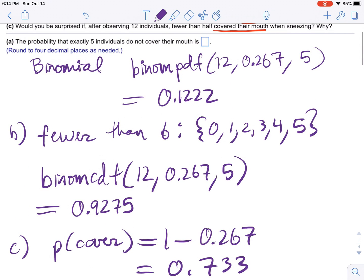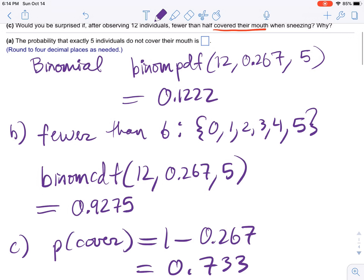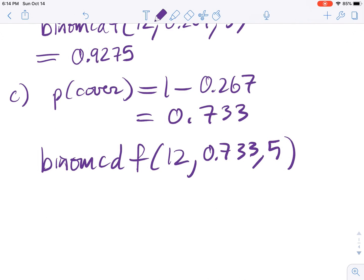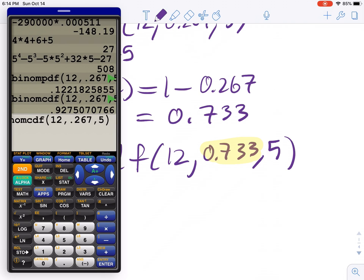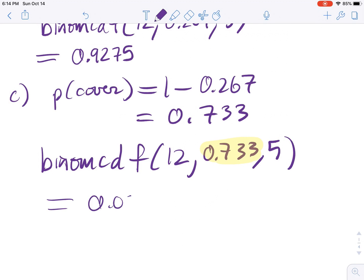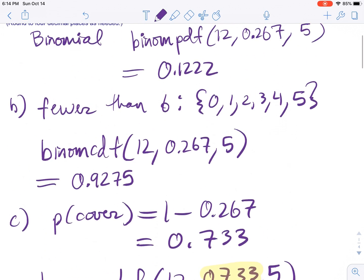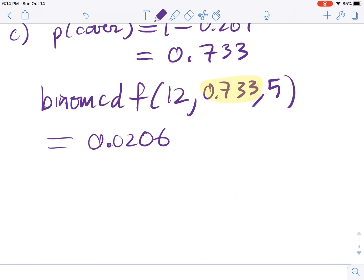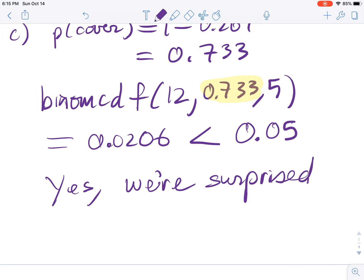So, it said fewer than half. Would you be surprised if fewer than half? Half is 6. Fewer than half would be 5 or below. And that's that. So, binomial CDF. But the tricky, tricky part is the fact that this probability has changed. Because that's the probability that they cover their mouth. Let's see what it is. Take this. Change this to 0.733. 0.0206. Now, it says, would you be surprised? And we're going to say, actually, we would be surprised. Because that probability is less than 5 percent. So, yes. We're surprised. Alright. That's it.